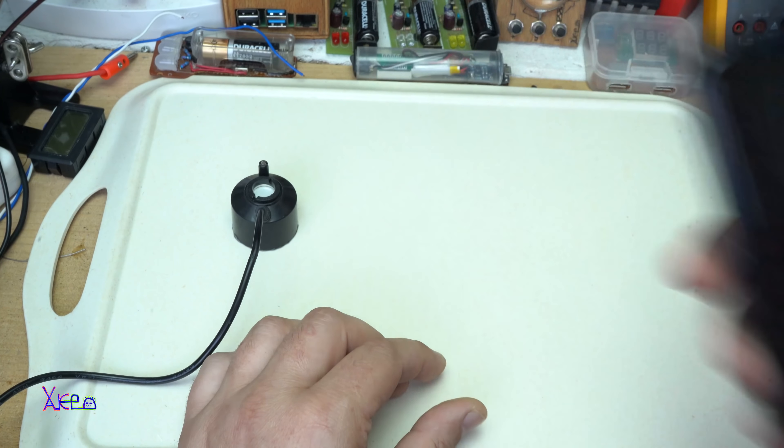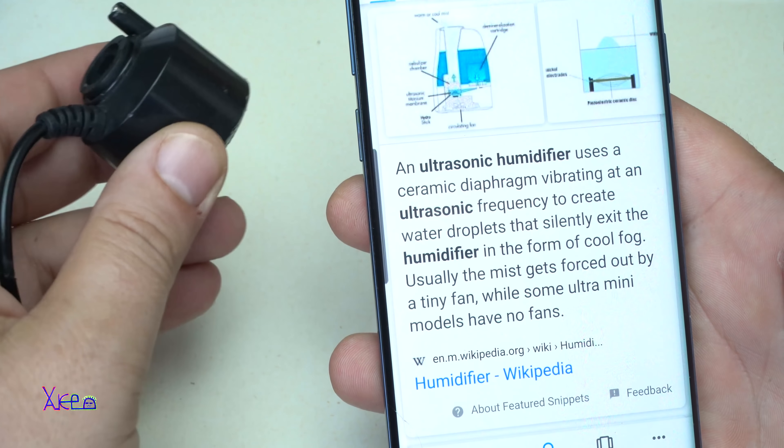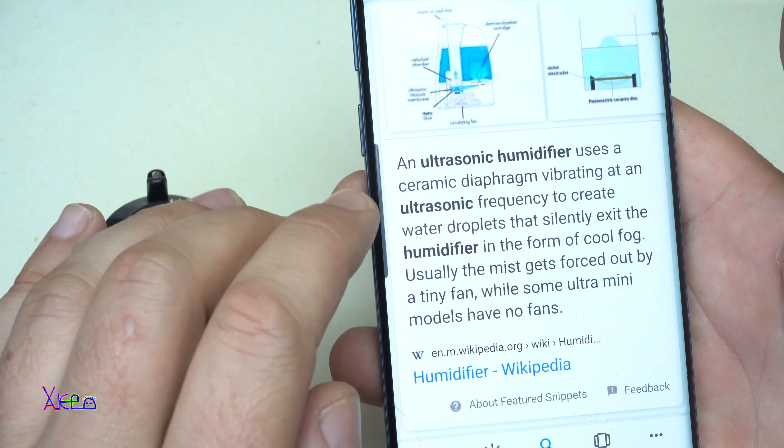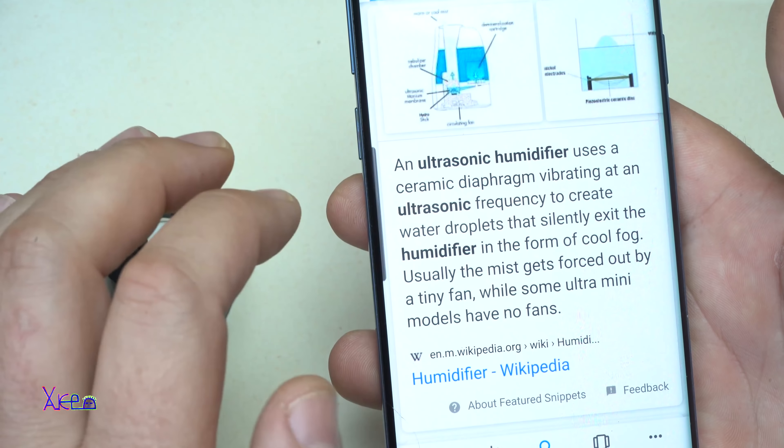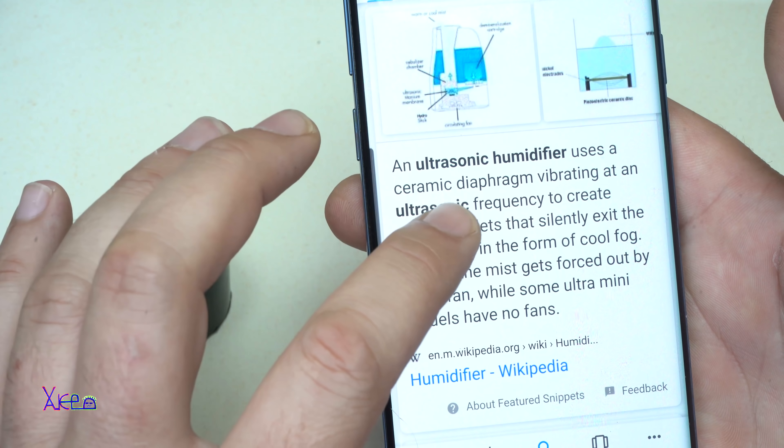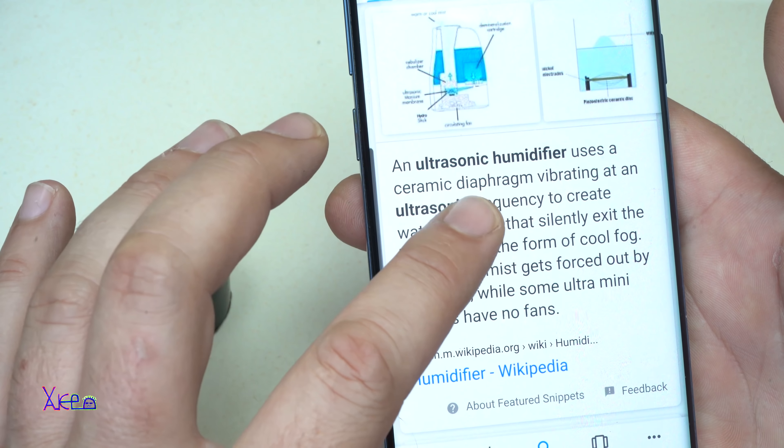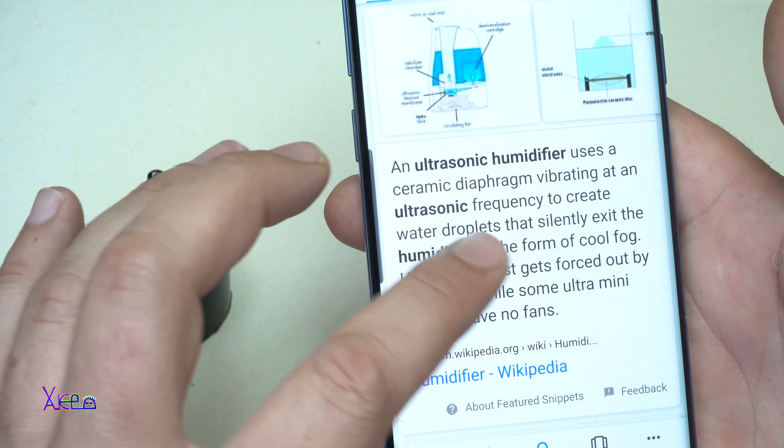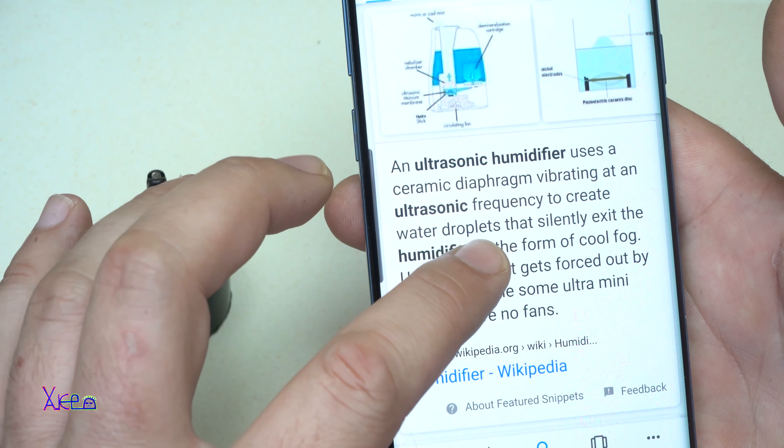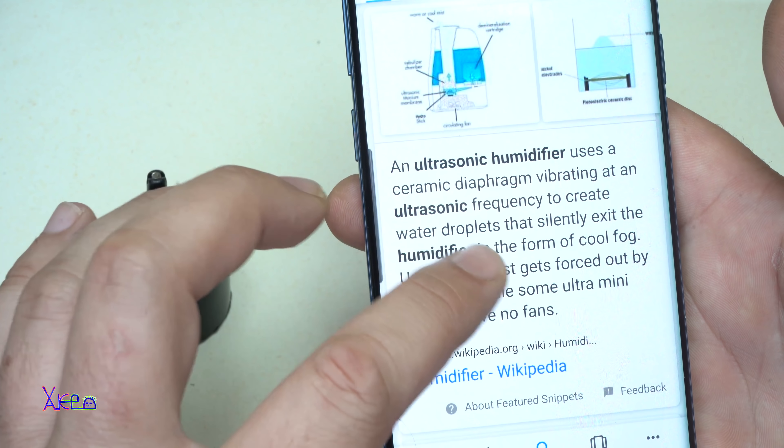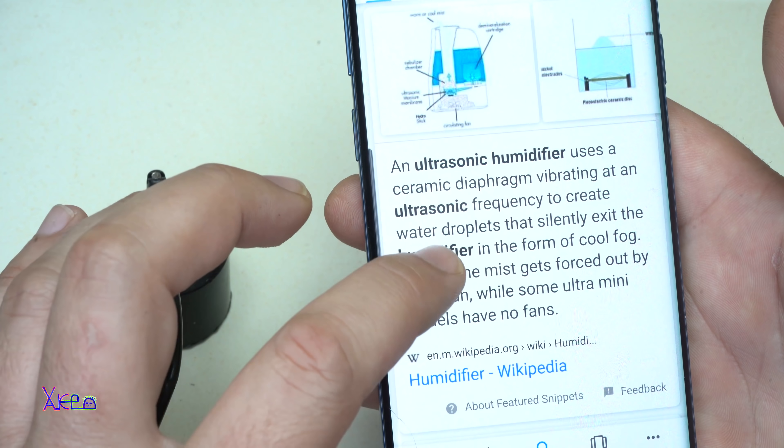Why? How does this guy work? I'm reading from Wikipedia. Ultrasonic humidifiers use ceramic diaphragms vibrating at ultrasonic frequencies to create water droplets that silently exit the humidifier in the form of cool fog.